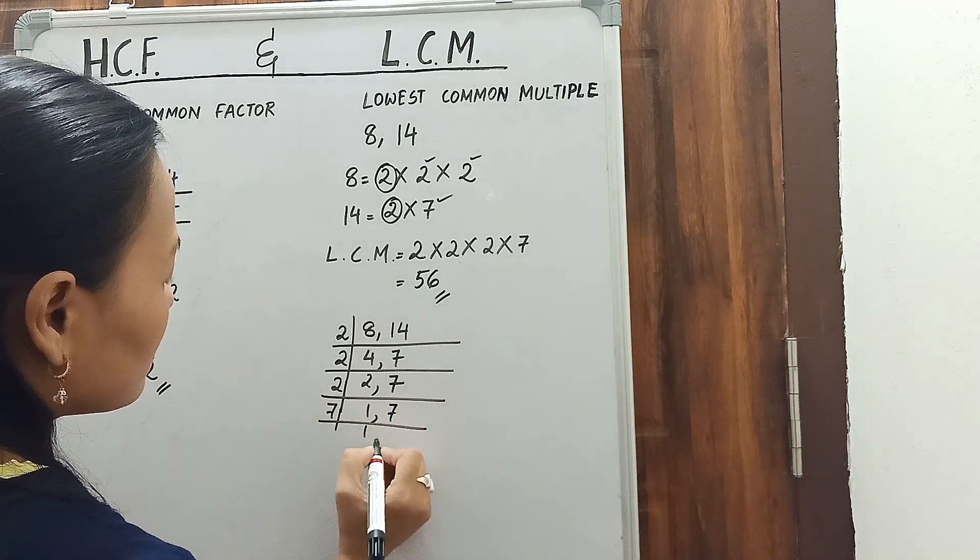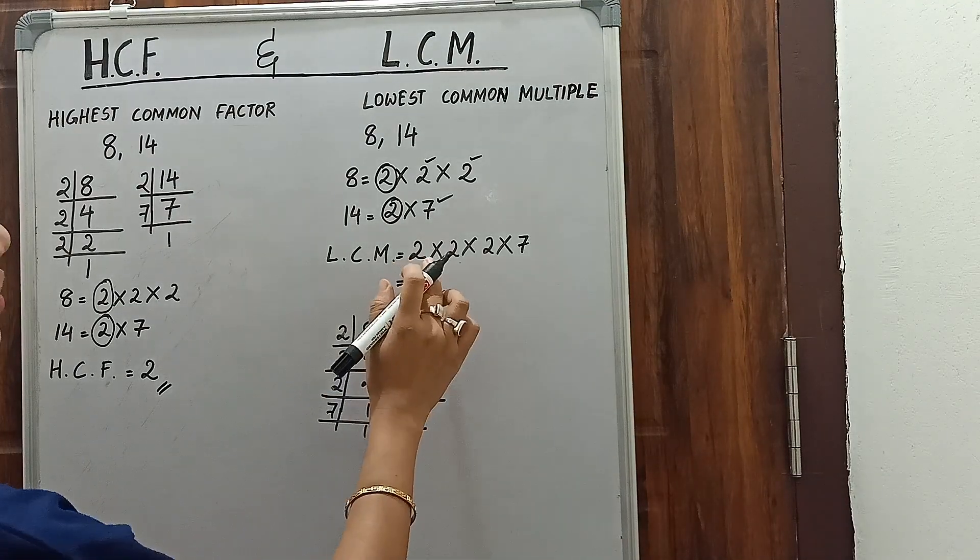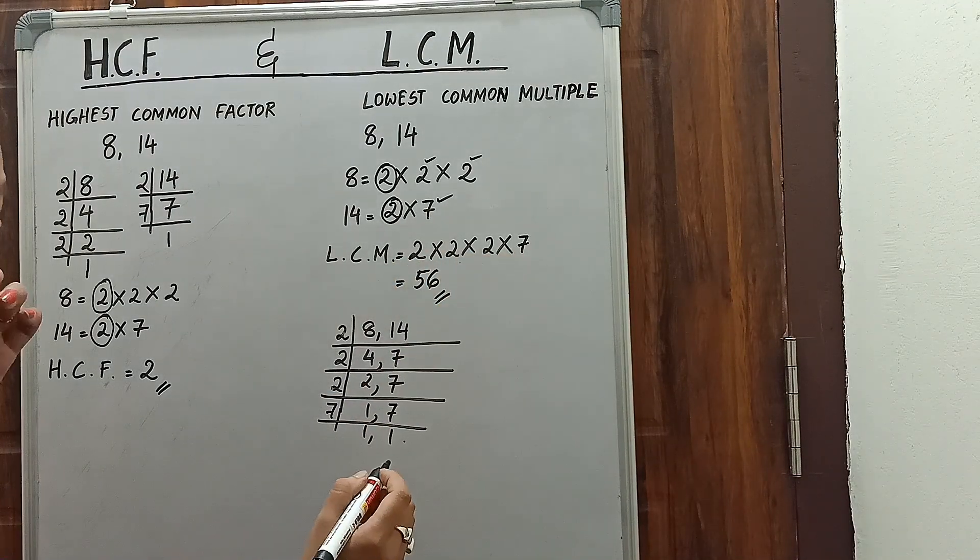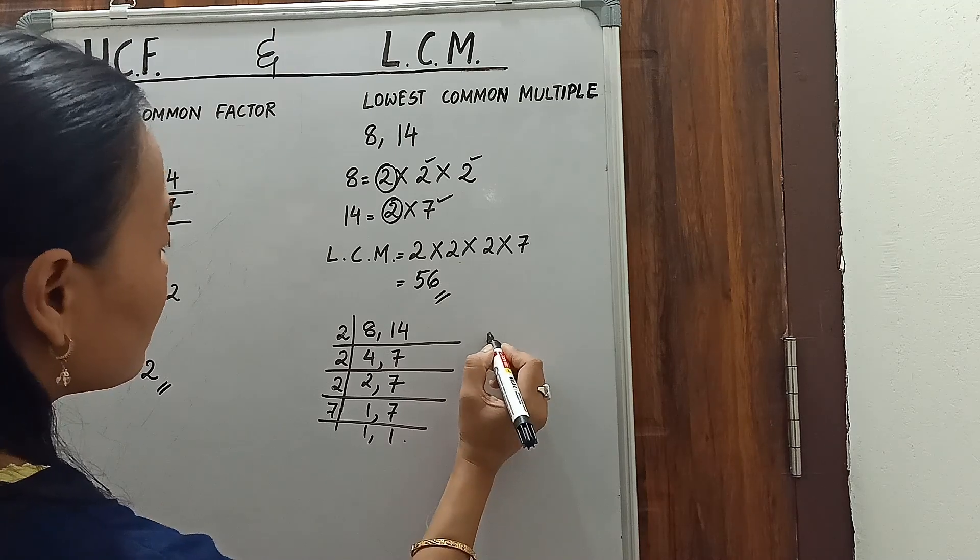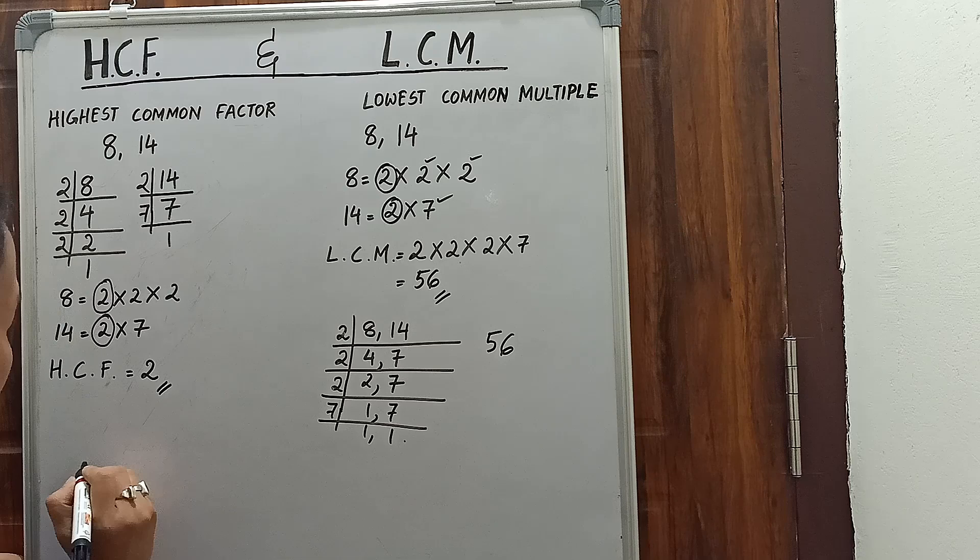7 times 1 is 7. So here also 2, 2, 2, and 7. Here also 2, 2, 2, and 7. You can apply any method; you'll get 56 as the answer.